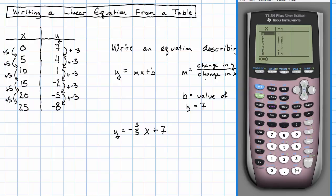x is 0, y is 7. x is 5, y is 4. x is 10, y is 1. x is 15, y is negative 2. x is 20, y is negative 5. x is 25, y is negative 8. That really does work.